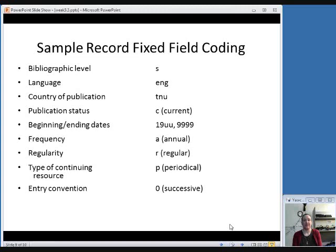This is an annual publication, so that goes in the frequency field. And it is regular, so R goes in the regularity field. It's a periodical, so P goes in the type of continuing resource field. And, as I said, everything will be zero for successive entry in the entry convention field. That's the current practice under the RDA rules.